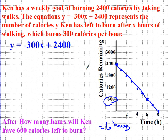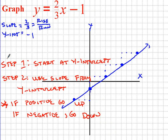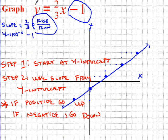Alright, that's all I've got. The big takeaways: step 1 is to always start at your y-intercept, and then from there use your slope — rise over run. If it's positive, go up and to the right; if it's negative, go down and to the right. Let me know if you have any questions. This was fun — Gurdias out!